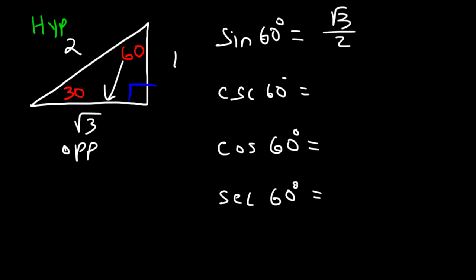Cosecant 60, which is 1 over root 3 over 2, becomes 2 square root 3 over 3. Cosine of 60 — we need to use the adjacent side, which is 1 divided by the hypotenuse of 2 — which means secant is 2 over 1, or simply 2.